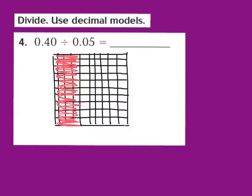I'm going to begin to break apart our model into groups of 5 hundredths. Here is 1, 2, 3, 4, 5 hundredths — and another group of 1, 2, 3, 4, 5 hundredths. So there are two groups. Then we have another group of 5 hundredths, and another group, and another group, and another group, and another group. Let's count: 1, 2, 3, 4, 5, 6, 7, 8 groups.